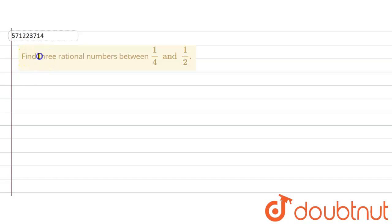The given question says that find three rational numbers between 1 by 4 and 1 by 2. So you are supposed to find out three rational numbers between the two rational numbers which are 1 by 4 and the other one is 1 divided by 2.